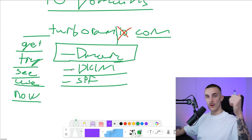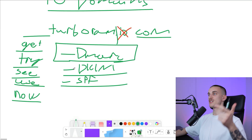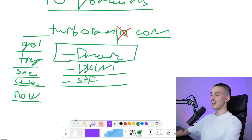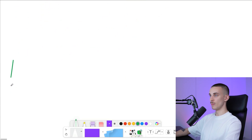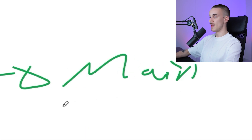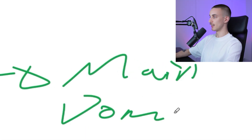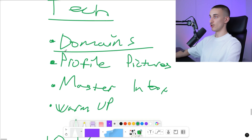Once your domains are set up with DMARC and custom tracking, and they're all .com domains, the last thing to do is forward them to your main domain. It's extremely simple — on Google, you just press 'website' and it asks what website you want to forward to. This way, if someone receives an email from getturboram.com and looks it up, they'll automatically get redirected to your main landing page, so they won't get confused.